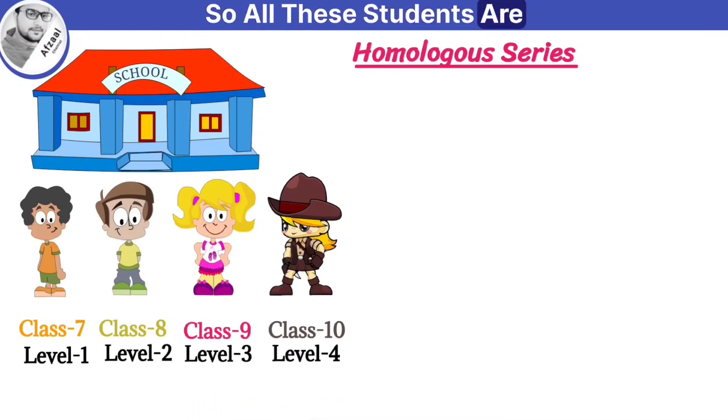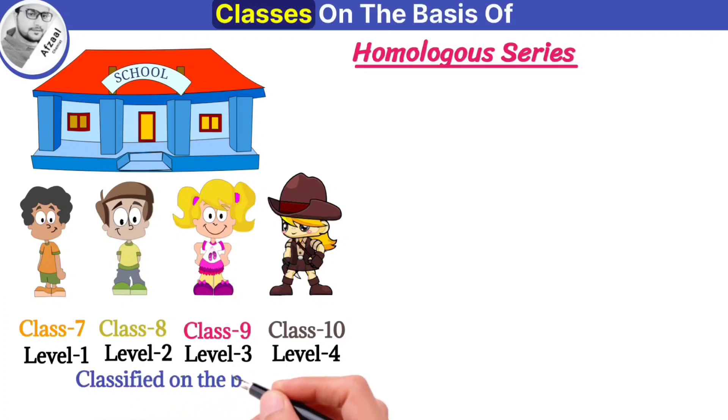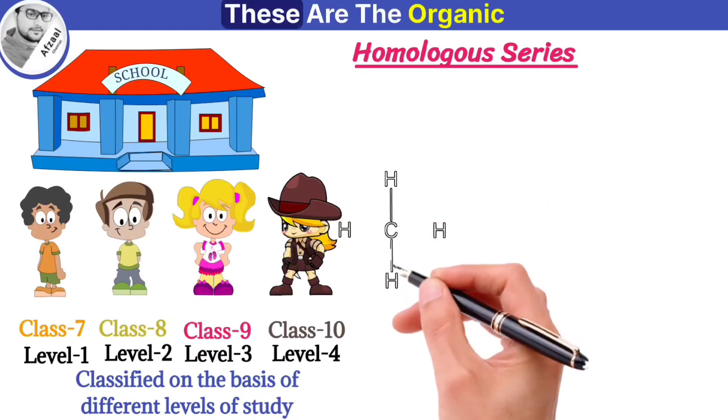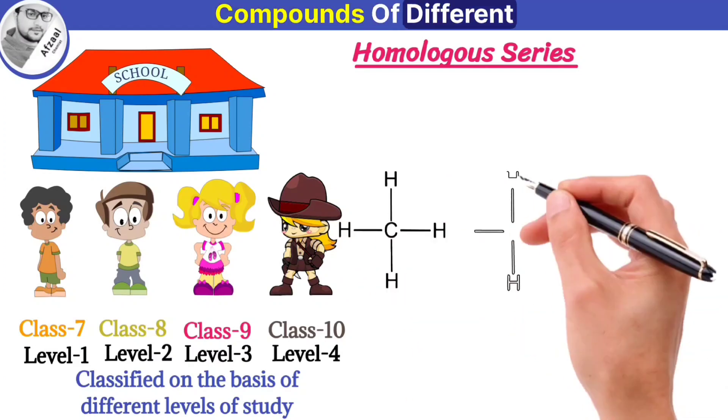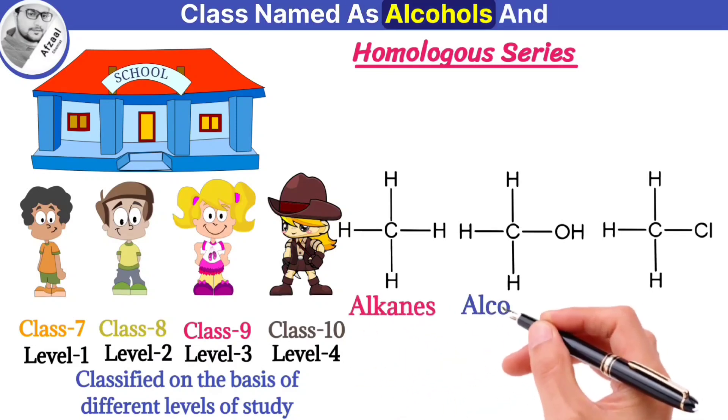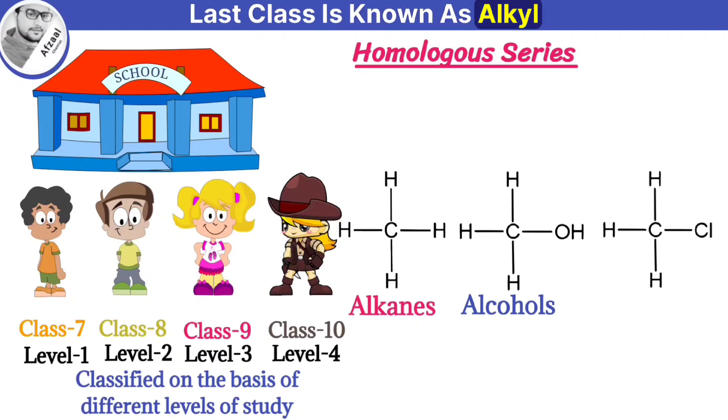So all these students are classified into different classes on the basis of different levels of study. Similarly, these are the organic compounds of different classes. The first compound belongs to class known as alkane, second compound belongs to class named as alcohols, and last class is known as alkyl halides.